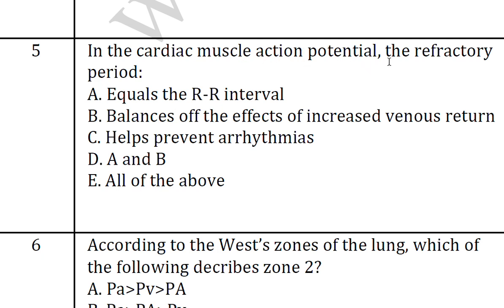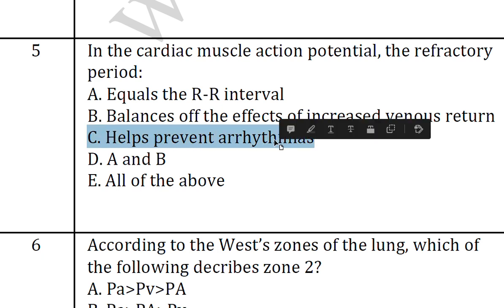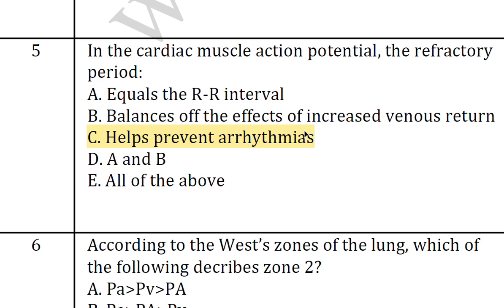The fifth question: in the cardiac muscle action potential, the refractory period — the answer is C, it helps prevent arrhythmias. In cardiac muscle action potential, the refractory period helps prevent arrhythmias.